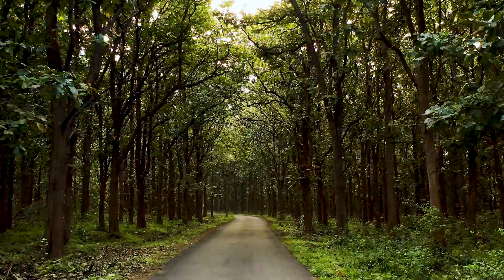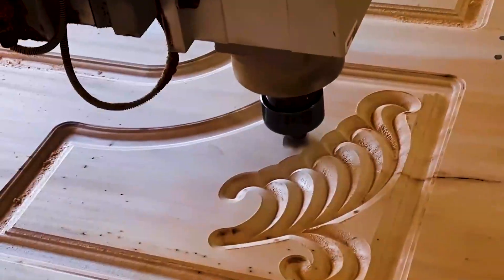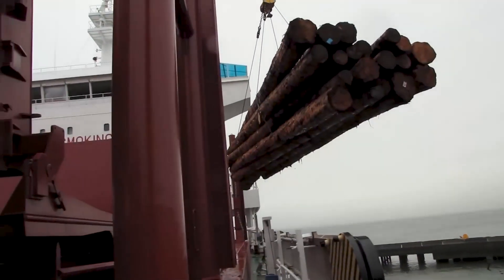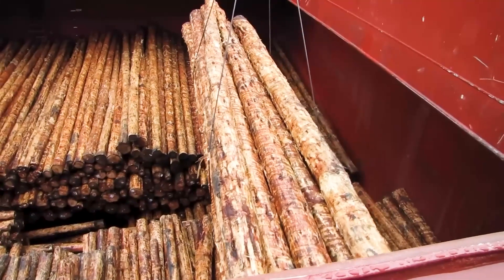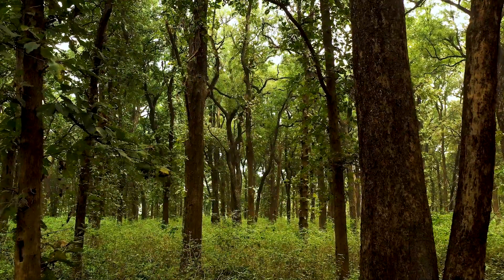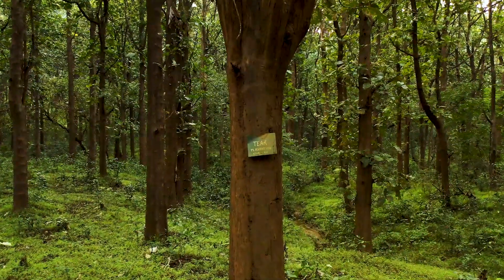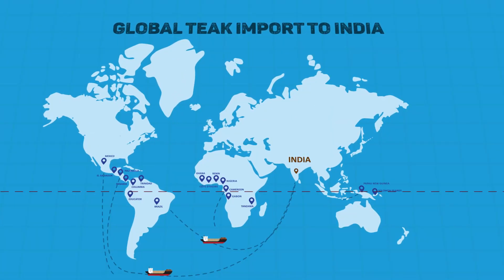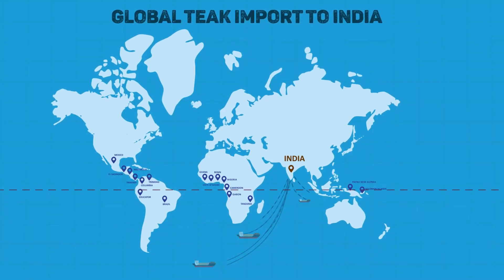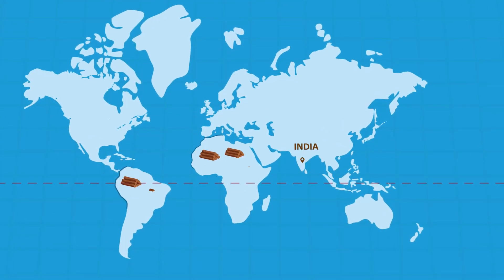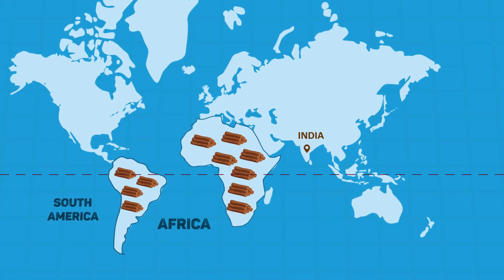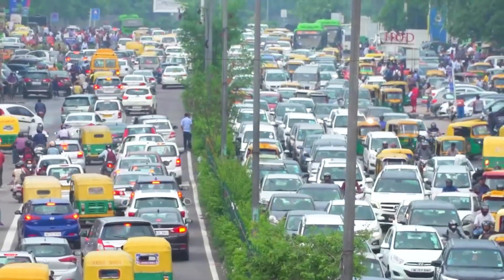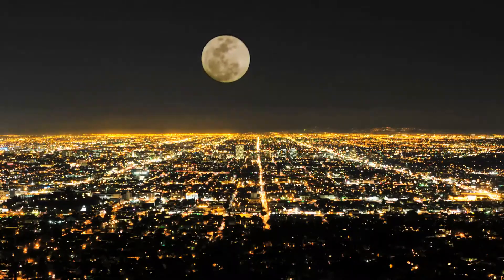India is one of the largest consumers of wood and wood products worldwide. Of the total imports, 15% is teak wood, making India the world's largest importer of teak. Though India has the largest area of natural teak forests, annually 1 million cubic meters of teak wood is being imported from about 17 different countries. Ironically, wood logs from South American and African countries form the bulk of imports. Population growth, urbanization, and economic development drive this demand.